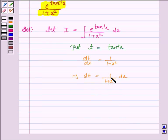Now 1 upon 1 plus x square into dx is dt, and tan inverse x is t. So the integral I becomes integral of e to the power t dt.